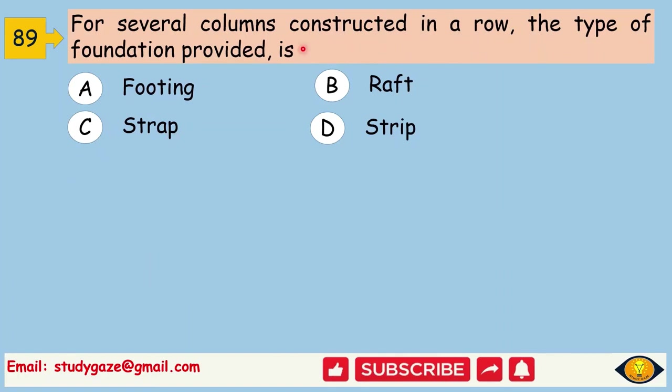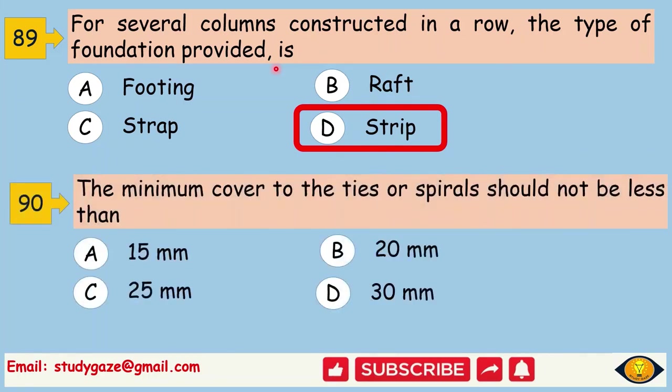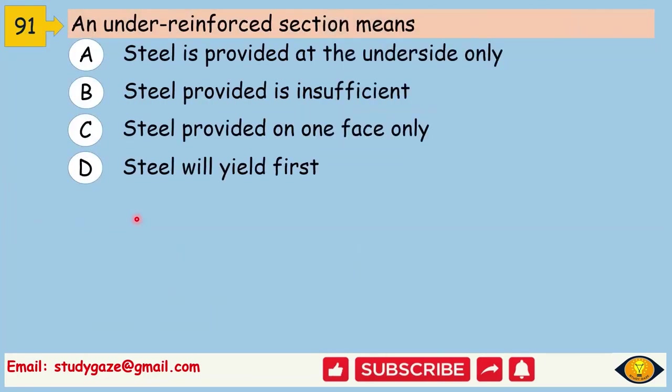For several columns constructed in a row, the type of foundation provided is. Answer is strip. The minimum cover to the ties or spirals should not be less than. Answer is 25 mm. An under reinforced section means steel will yield first.